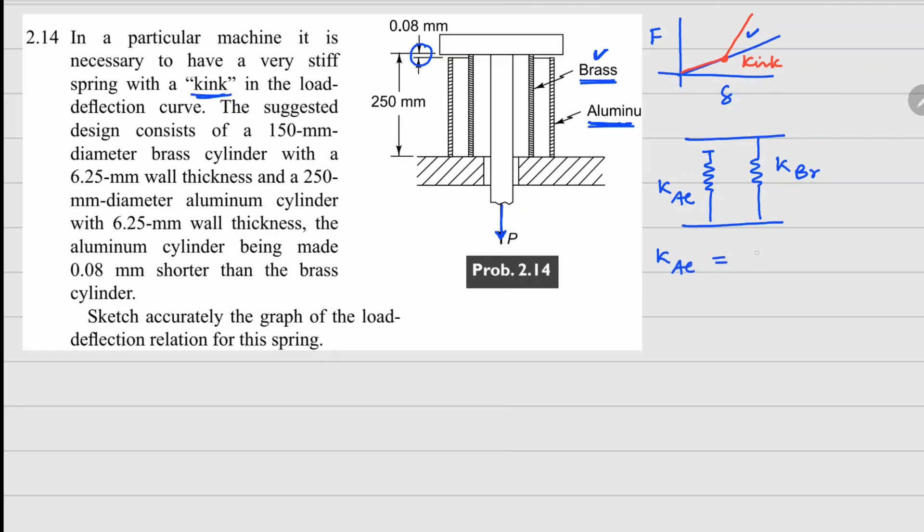We can use Hooke's law which says elastic modulus times area divided by length for any bar. This is for aluminum and similarly for brass also we can have EA over L defined in this one.